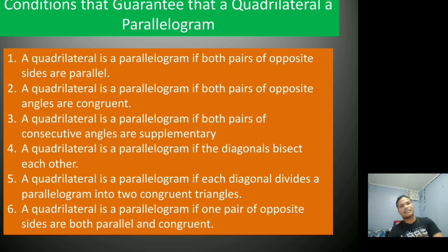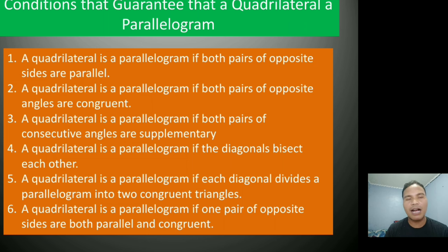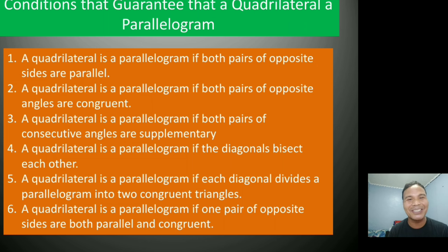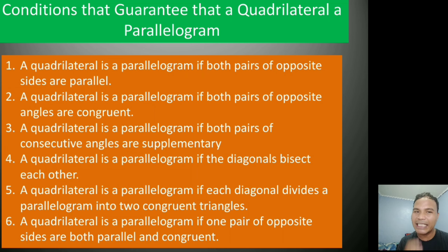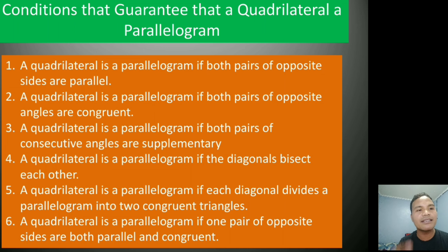Let us talk about conditions that guarantee that a quadrilateral is a parallelogram. First, both pairs of opposite sides are parallel. Second, both pairs of opposite angles are congruent. Third, both pairs of consecutive angles are supplementary. Fourth, the diagonals bisect each other. Fifth, each diagonal divides the parallelogram into two congruent triangles. Sixth, one pair of opposite sides are both parallel and congruent.